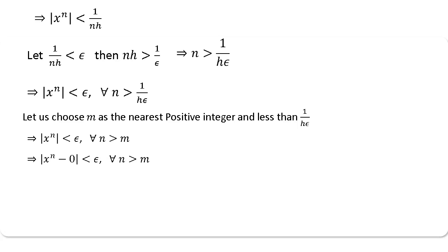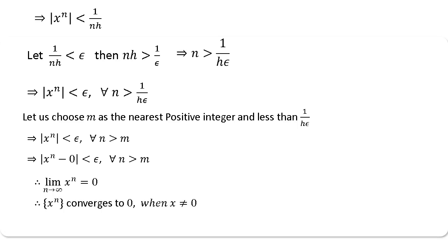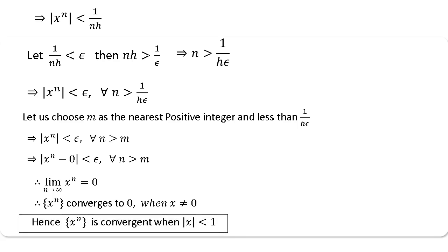This can be written as |x^n − 0| < ε. Using the definition of limit, the limit of xn is 0. So the sequence x^n converges to 0 when x ≠ 0. Combining both sub-cases, the sequence x^n is convergent when |x| < 1, i.e., x lies between −1 and +1.